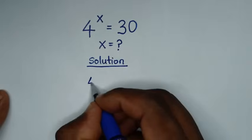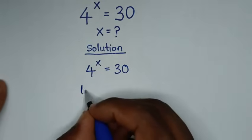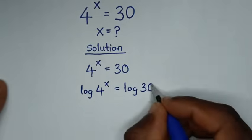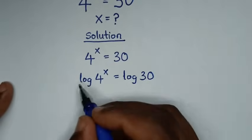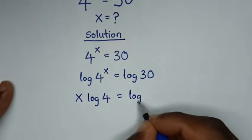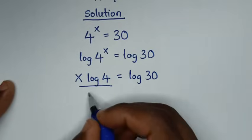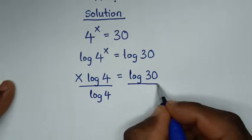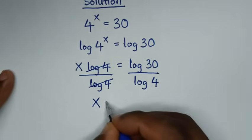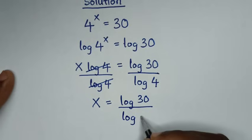From our problem, which is 4 power of x is equal to 30. In the first step we will apply log to both sides. So it will be log of 4 power of x is equal to log of 30. Then this power of x will move to the front, so it will be x times log of 4 is equal to log of 30. Then we will divide by log of 4 on both sides, so this and this will cancel, then it will be x is equal to log of 30 over log of 4.